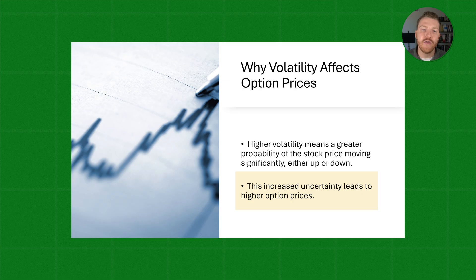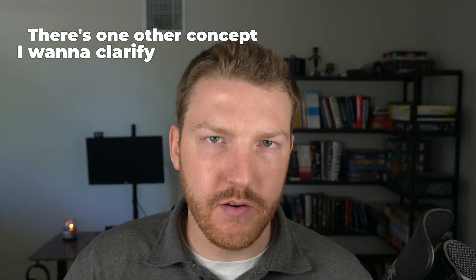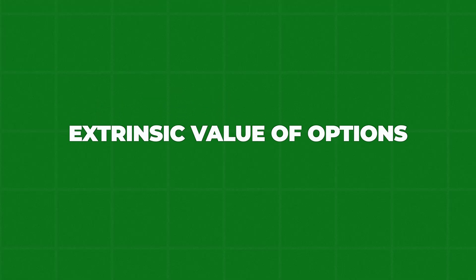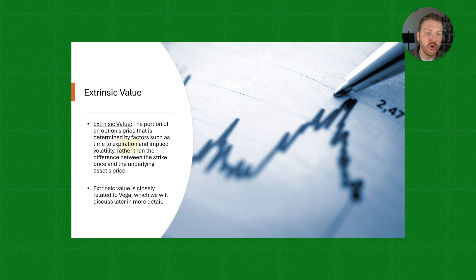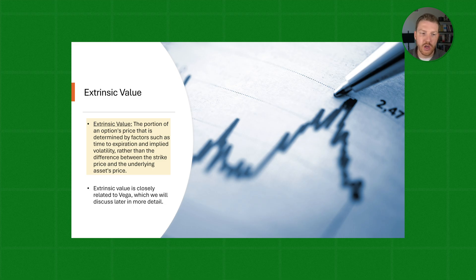This increased uncertainty leads to higher option prices — higher volatility means greater uncertainty, which translates into higher option prices. There's one other concept to clarify before we get into vega: the concept of an option's extrinsic value. The extrinsic value is the portion of an option's price determined by factors such as time to expiration and implied volatility — not the part that comes from the difference between the strike price and the underlying asset's price. Extrinsic value is closely related to vega.